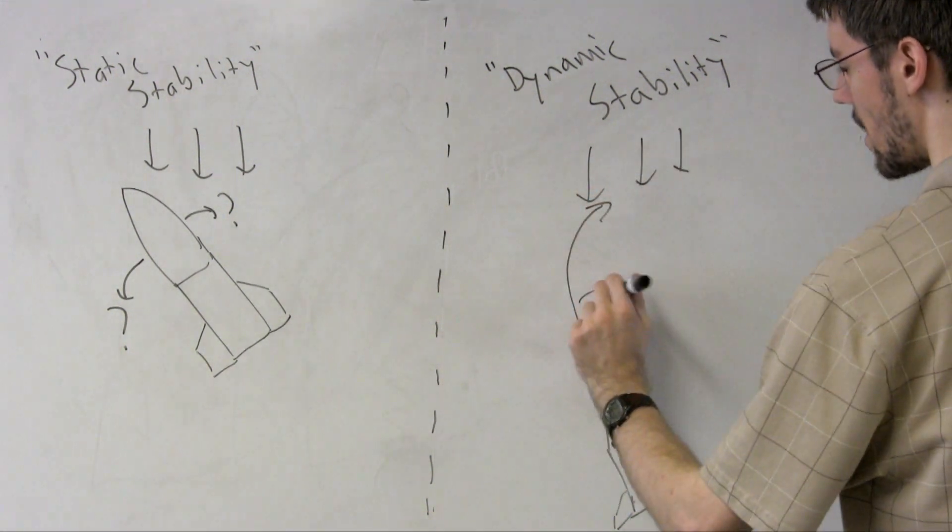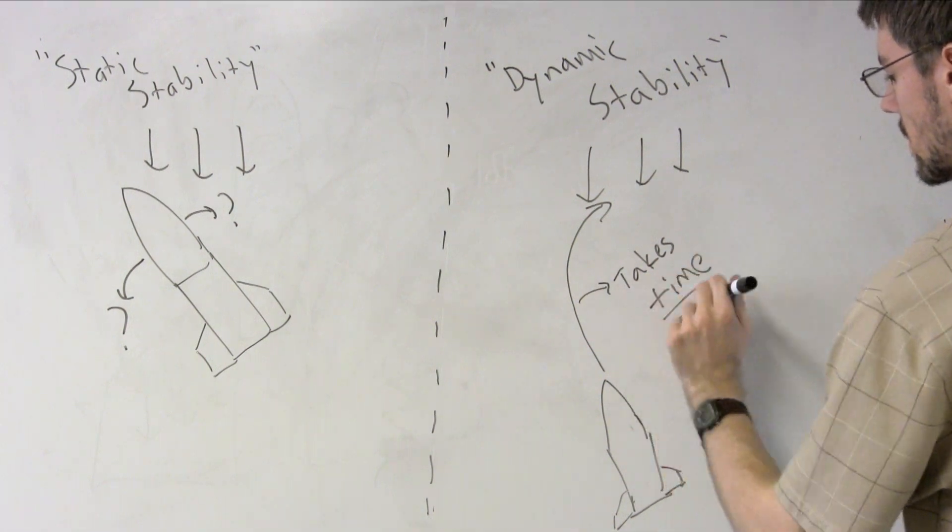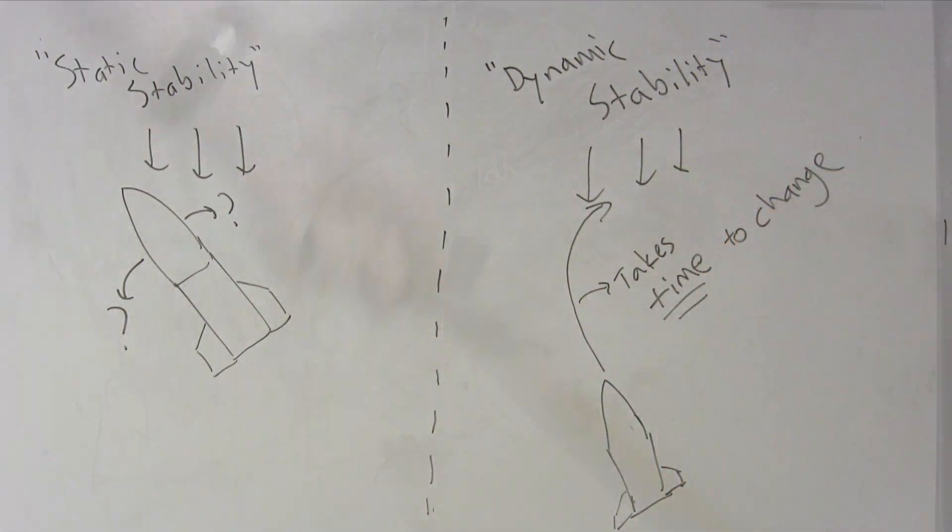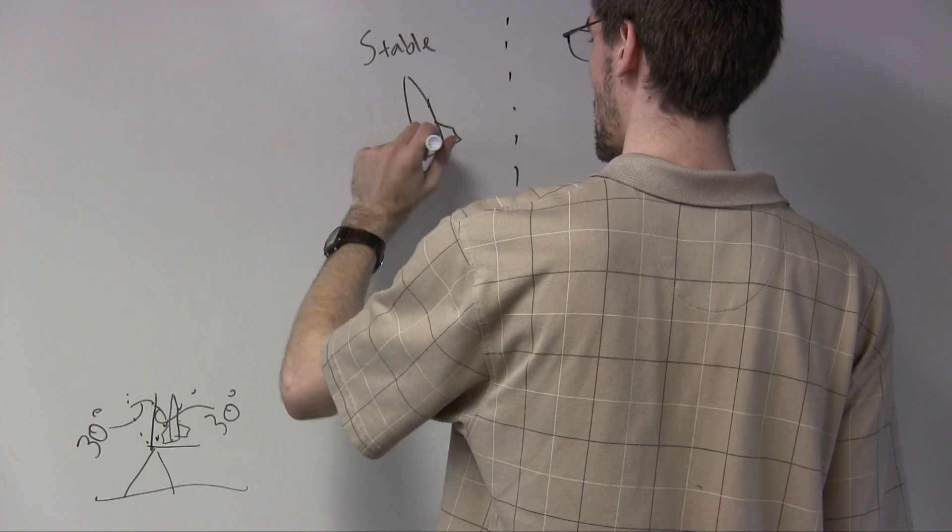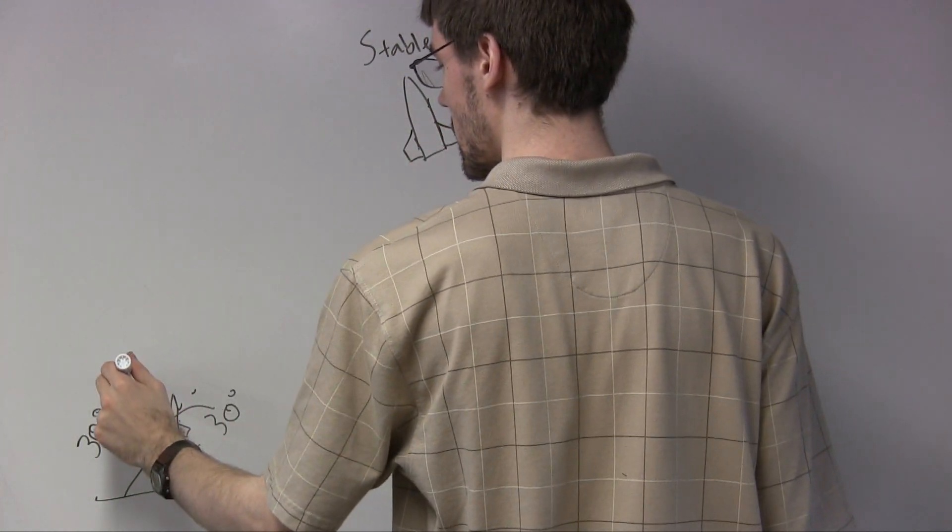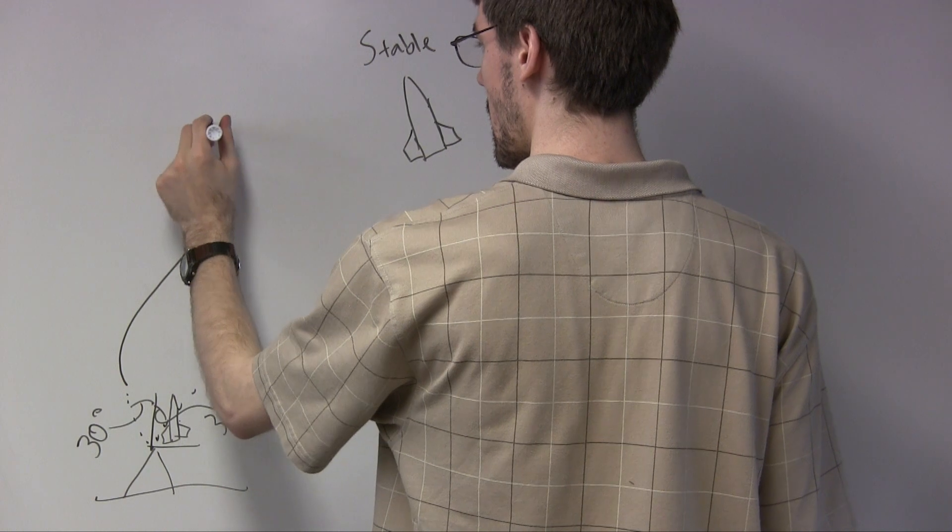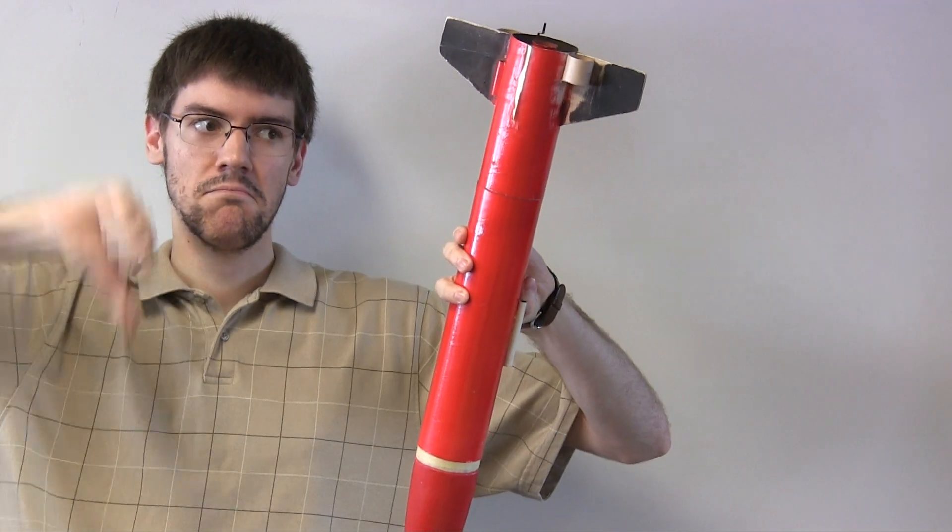A rocket with lots of mass concentrated in a single point has low dynamic stability, because it will spin very easily. Think about how easy it is to swing a hammer by its head. A rocket with low dynamic stability will spend lots of time swaying back and forth, which means it doesn't fly up as high as it could, and can actually flip over completely if it gets hit by an unlucky gust.